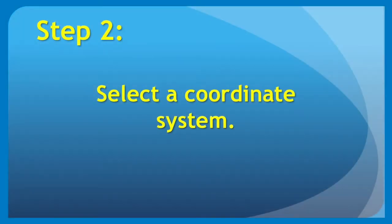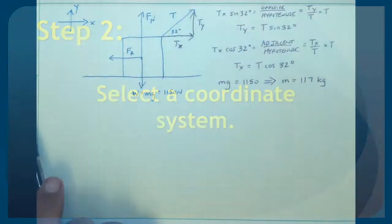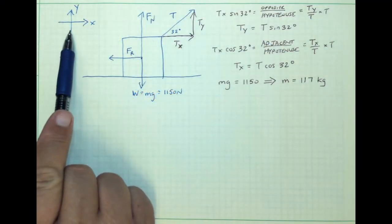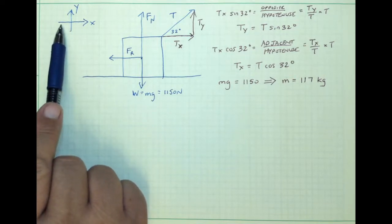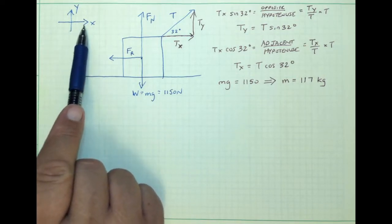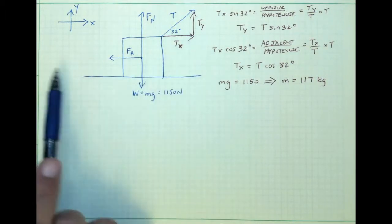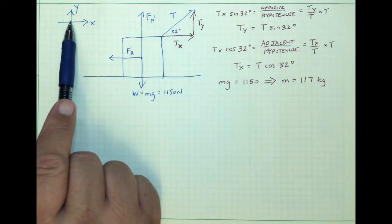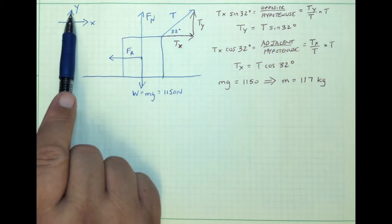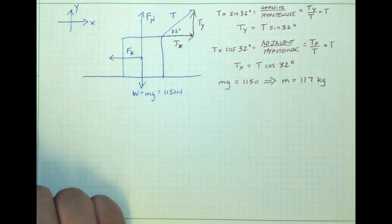The second step in the problem-solving process is to select a coordinate system. We will stick with the coordinate system from previously, with x being the horizontal direction, positive x being the direction the crate will move to the right, the vertical direction being y, with positive being upward — chosen arbitrarily because the crate is neither moving up nor down.